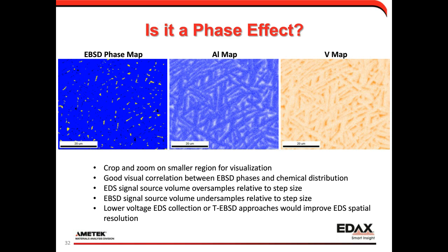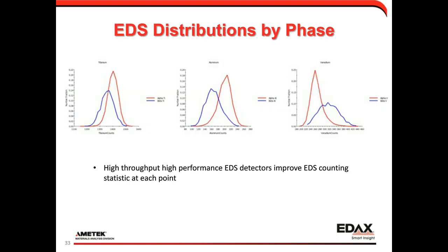We can break this out to show how distributions change as a function of crystal phase. The two phases on multi-charts show different distributions of aluminum, titanium, and vanadium. With our high-throughput detectors, we improve EDS counting statistics to allow this sort of distribution and counting analysis.